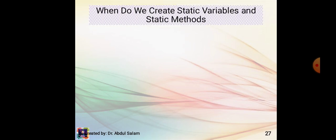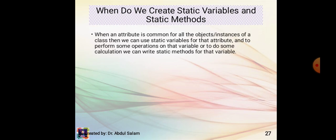When do we create static variables and static methods? When an attribute is common for all the objects or instances of a class, we can use static variables for that attribute. To perform operations or calculations on that variable, we can write static methods.